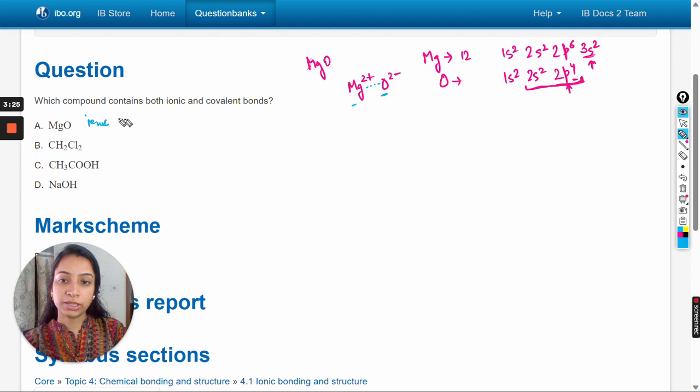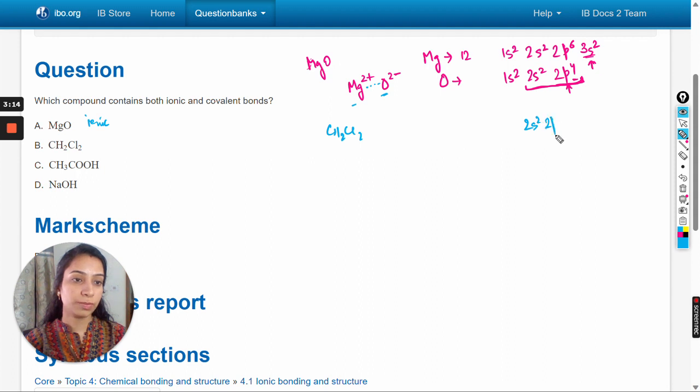Next is CH2Cl2. Configuration of carbon is 2s2 2p2, so there are four electrons in the valence shell. Hydrogen has one electron.